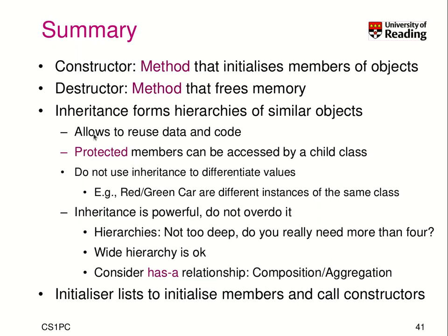To wrap up today's lecture: a constructor is a method that initializes the members of an object. The destructor is a method that frees memory. With inheritance, we form hierarchies of similar objects that allows us to reuse data and code. Protected members can be accessed by child classes, while private members can only be accessed by methods of the respective class. We should not use inheritance to differentiate values — for example, we should not have a green and a red car as child classes, because these are just different instances of the same class with different data values. Semantically, they are the same.